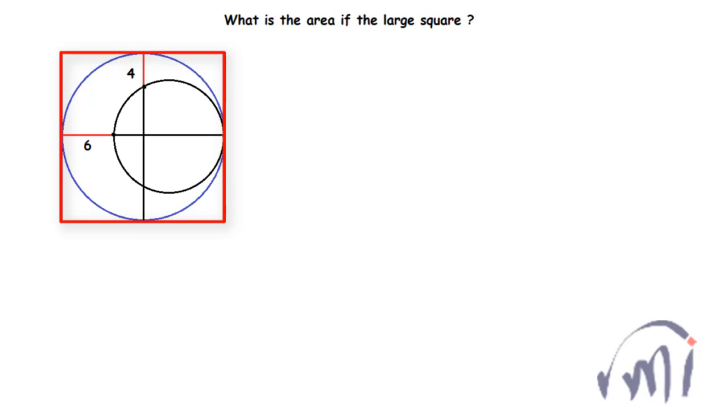We have a large square with a blue circle inscribed inside it. All sides of the square are tangent to this blue circle, and inside that blue circle is another circle which has one common tangent with the blue circle.